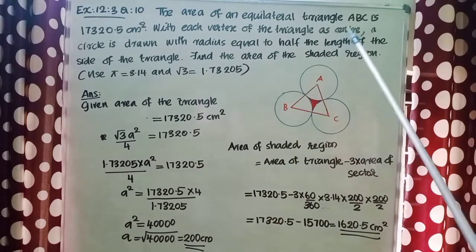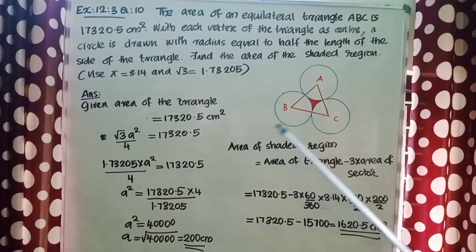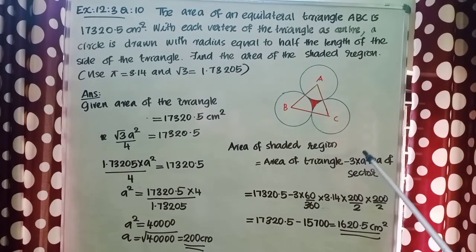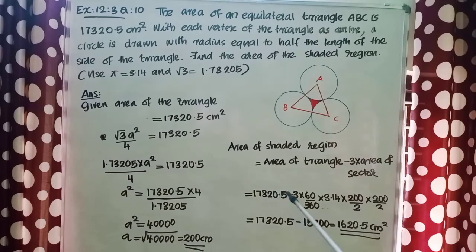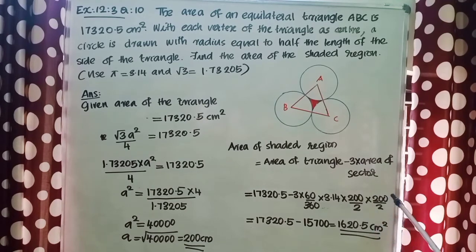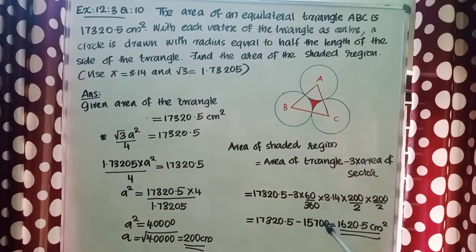The side is 200 cm, therefore the radius is half of it, that is 200 by 2, which equals 100 cm. Area of the shaded region equals area of triangle minus 3 into area of sector. That is equal to 17,320.5 minus 3 into 60 by 360 into 3.14 into 100 into 100. That equals 17,320.5 minus 15,700, which equals 1,620.5 cm².